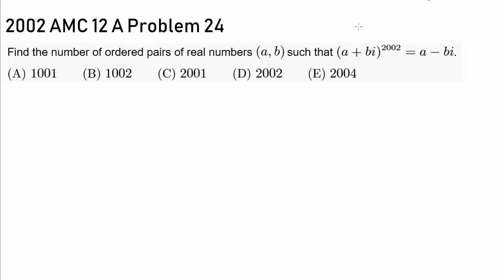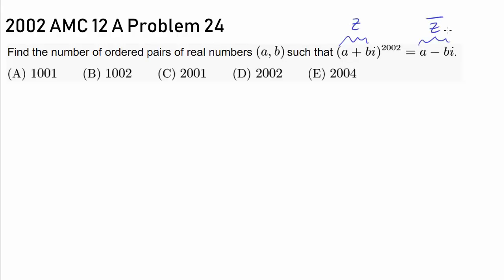So basically, we want to find all distinct complex numbers of the form A + Bi such that (A + Bi)^2002 equals the conjugate of A + Bi. If A + Bi is some complex number Z, we are getting the conjugate. So we want to find the number of solutions to Z^2002 = Z̄.